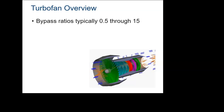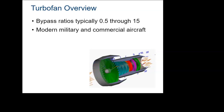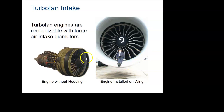Turbofan bypass ratios range from about a half to fifteen; seven to ten is fairly typical for commercial airlines. Some fighter aircraft use them with low bypass, while cargo aircraft definitely use them. Here's what the real fan looks like — you can see a person sitting in the housing of what I think is a 777. That would be a pretty high bypass turbofan.